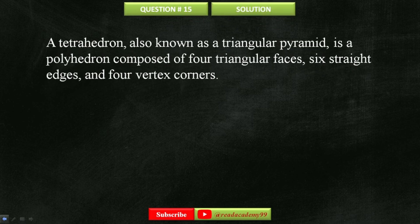A tetrahedron, also known as a triangular pyramid, is a polyhedron composed of four triangular faces, six straight edges, and four vertex corners.